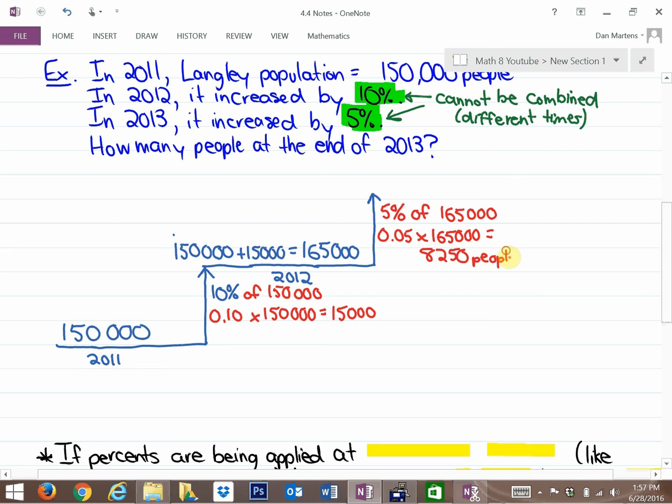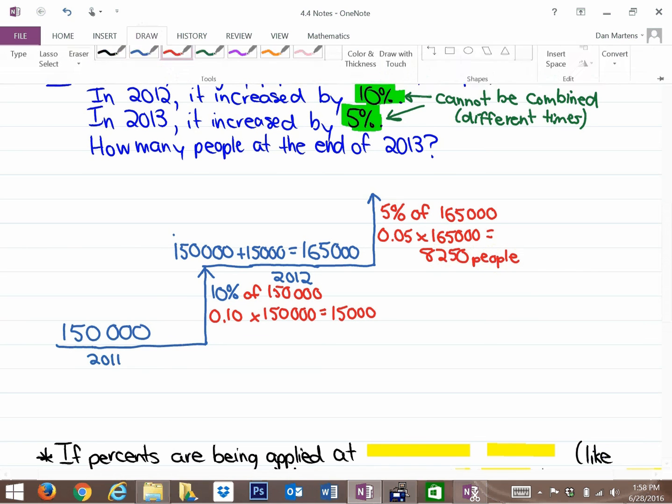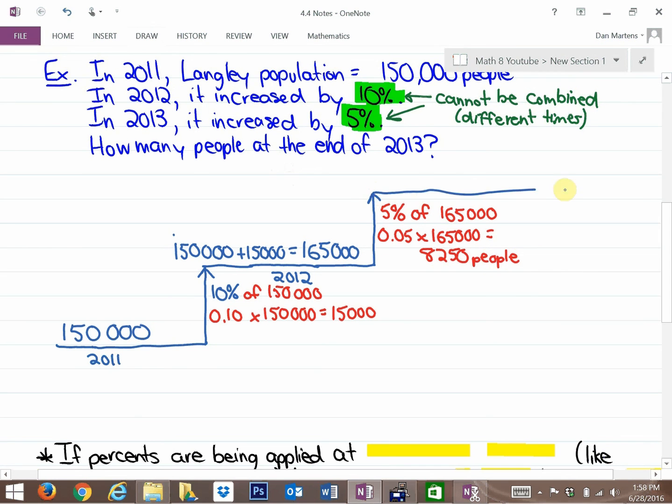That's the increase. So, in essence, your final population in 2013 is 165,000 people plus the increase. So 165,000 plus the 8,250 person increase in 2013 gives us a total of 173,250 people. That's the answer to this question, that's the number of people at the end of 2013.